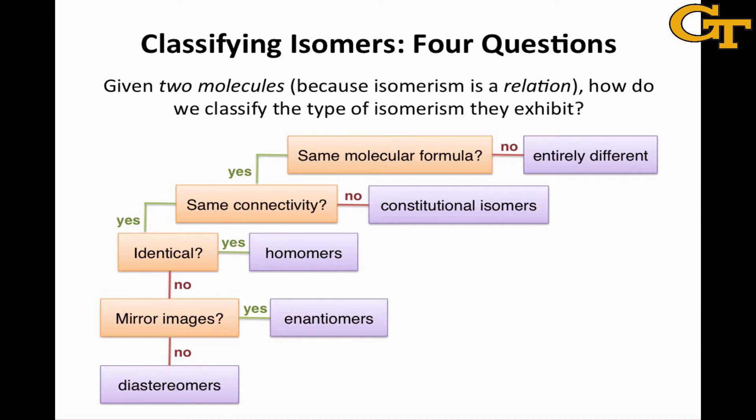From these levels of structure, we can imagine different types of isomers, which differ at the different levels but are the same at the higher levels. We can classify isomers and classify isomeric relationships using a flow chart that starts with the broadest level of structure and moves down to more and more specific types. It's worth keeping in mind that to do this, we need two molecules for comparison. Isomerism is a relation.